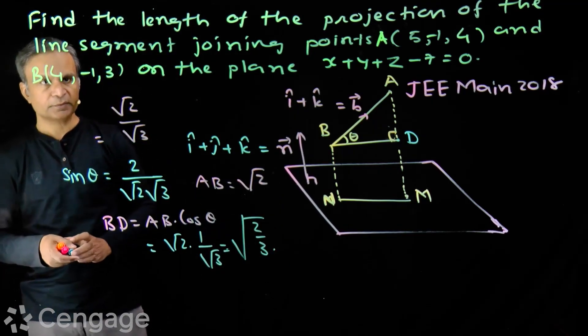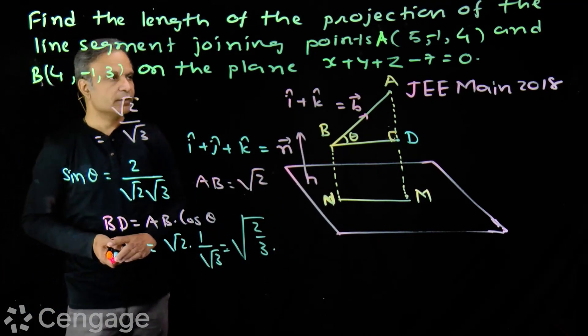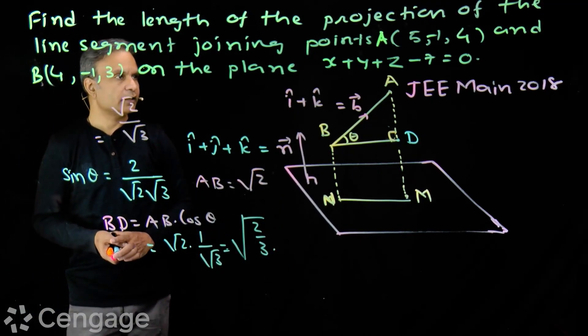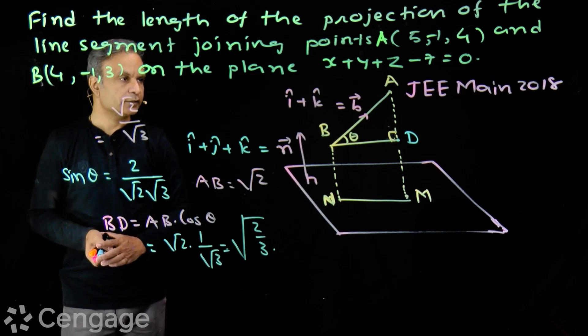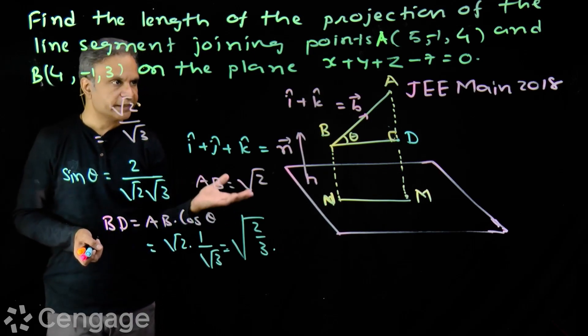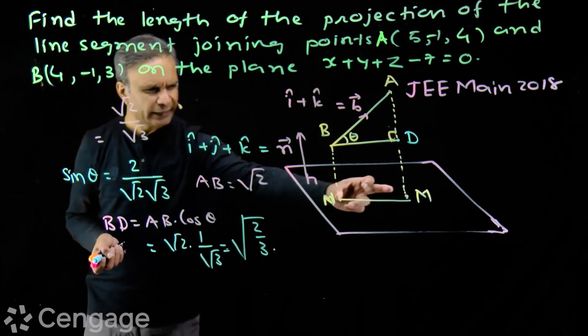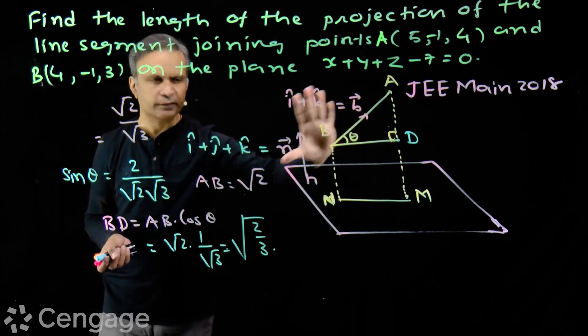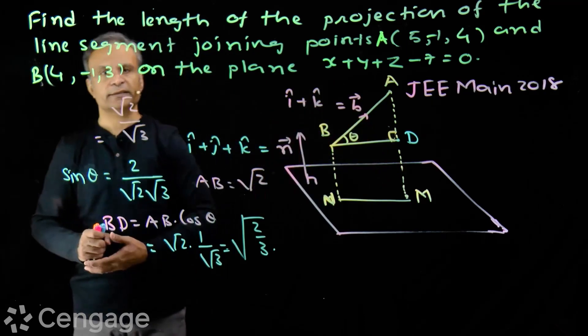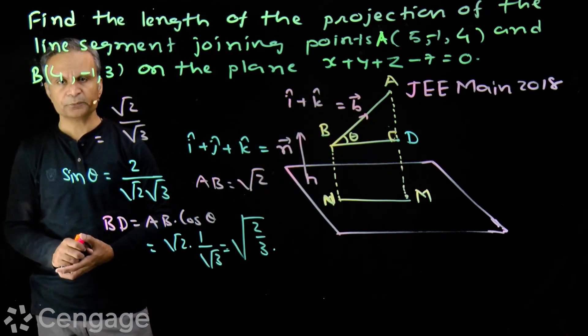We can solve it this way too. When points A and B are considered on the same side of the plane, we can find the projection length using the angle between the line and the plane.